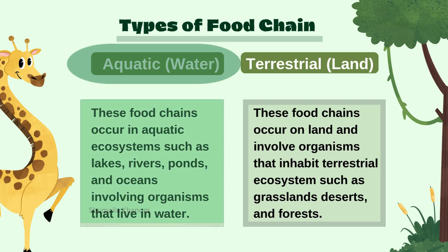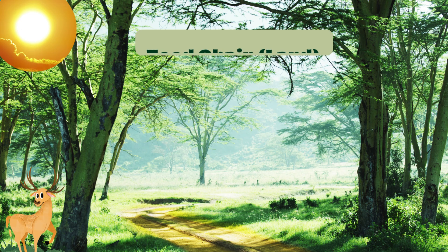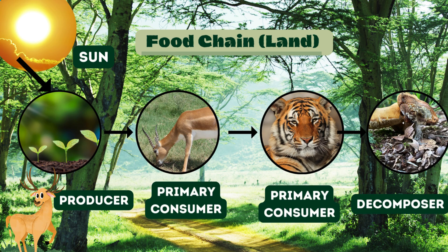Types of food chains: aquatic food chains occur in aquatic ecosystems such as lakes, rivers, ponds, and oceans, involving organisms that live in water. Terrestrial food chains occur on land and involve organisms that inhabit terrestrial ecosystems such as grasslands, deserts, and forests. Here is an example of a food chain on land.